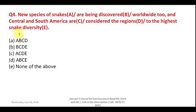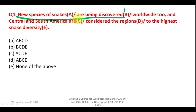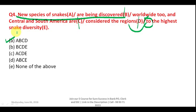Question 4: 'New species of snakes are being discovered worldwide, and Central and South America are considered the regions that have the highest snake diversity.' This is written in passive voice, which is correct. However, the preposition 'that' used here is wrong — they are considered the regions with the highest snake diversity, so the preposition is incorrect. Part E is wrong and your answer is A.